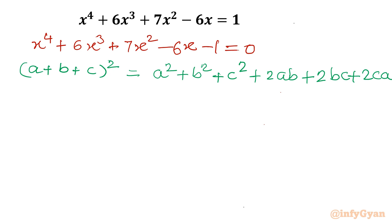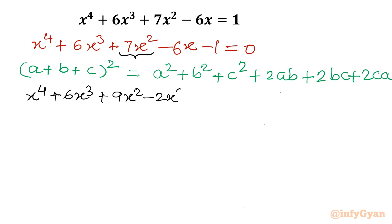Now I am going to fit this identity into the given problem. I will split 7x² as 9x² - 2x². Also, the last term -1 I will write as +1 - 2. So we have: x⁴ + 6x³ + 9x² - 2x² - 6x + 1 - 2 = 0.